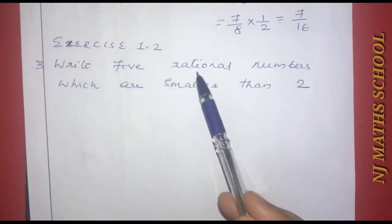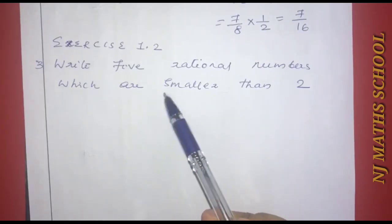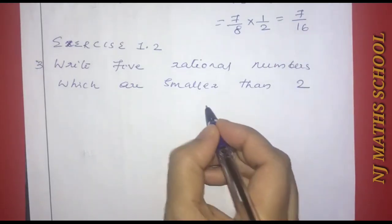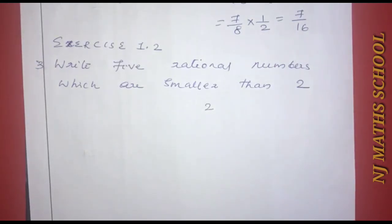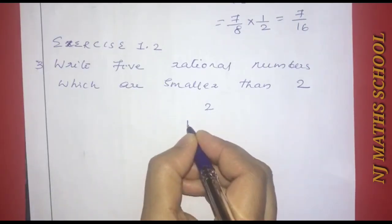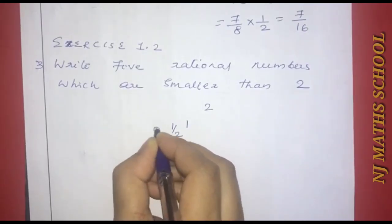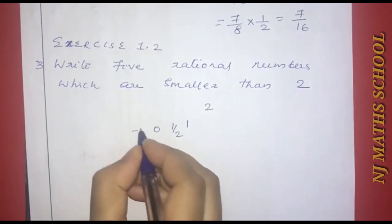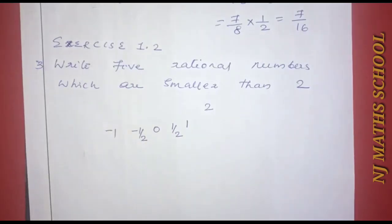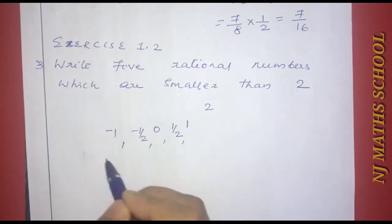Exercise questions. First question: Write 5 rational numbers which are smaller than 2. We can choose: 1, 1 by 2, 0, negative 1 by 2, and negative 1. These are 5 rational numbers that are all smaller than 2.